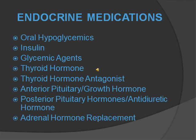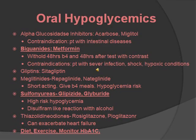Now we're going into endocrine medications. Oral hypoglycemics — there are a lot of classes. The main ones to focus on: metformin should be withheld 48 hours before and 48 hours after a test with contrast dye. Anything with iodine is contraindicated in patients with severe infection, shock, or high toxic conditions. The sulfonylureas class includes glipizide and glyburide and has a high risk for hypoglycemia. A disulfiram-like reaction can occur with alcohol, so do not take with alcohol. For all these medications, maintain a healthy diet and exercise, and monitor hemoglobin A1c, which reflects glucose levels over the past three months.